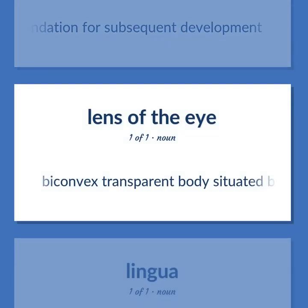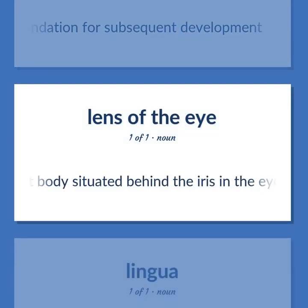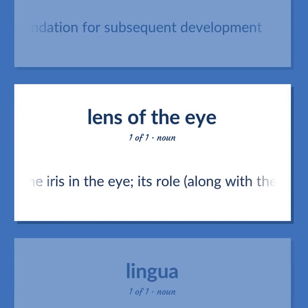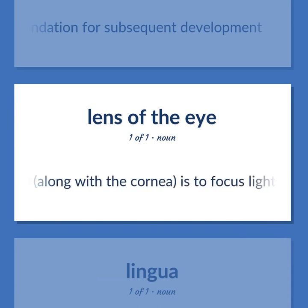A convex transparent body situated behind the iris in the eye. Its role, along with the cornea, is to focus light on the retina.